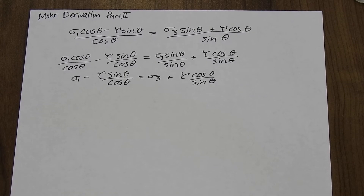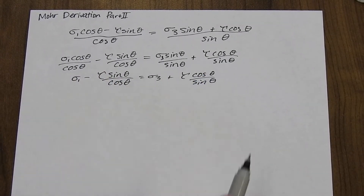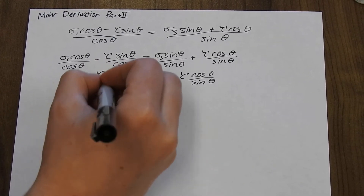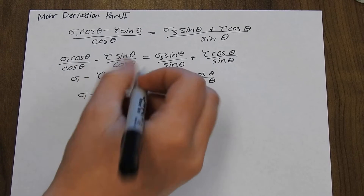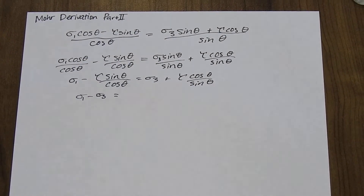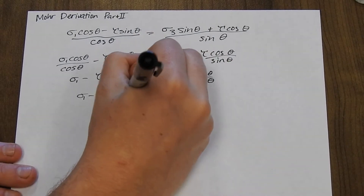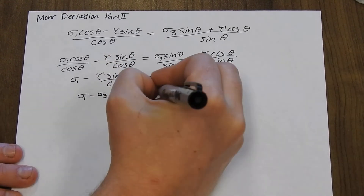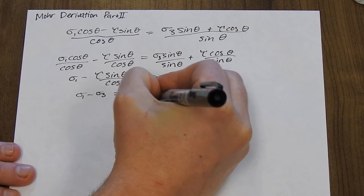Now I'm going to group those two terms together and bring the tau terms together, factoring out tau. That gives sigma_1 minus sigma_3 on one side, and then factoring out tau we get sine(θ)cosine(θ) plus cosine(θ)sine(θ) on the other side.